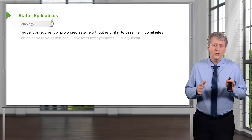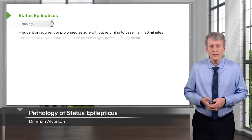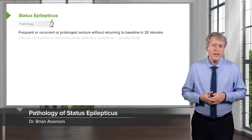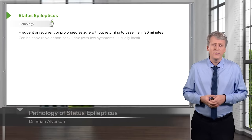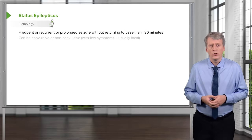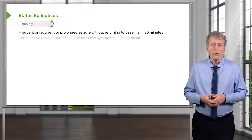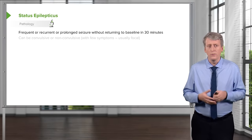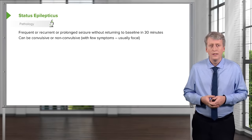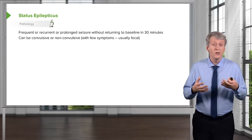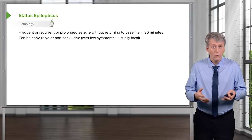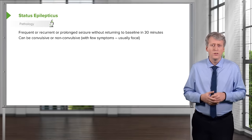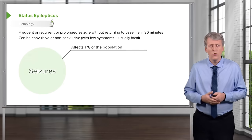Status epilepticus is frequent, recurrent, or prolonged seizures without returning to baseline in a 30-minute period. It can be convulsive or non-convulsive, with few symptoms and usually focal.